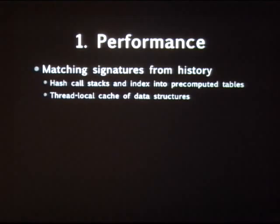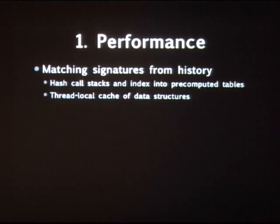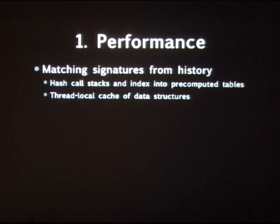Another trick is to employ a thread-local cache of some of the data structures, which helps eliminate contention especially with a large number of threads. The overhead is mostly due to computing the hash. In Java, where you use getStackTrace and it returns a vector of strings that must be allocated, there's a bit more overhead — the Java overhead can go as high as about 14%.